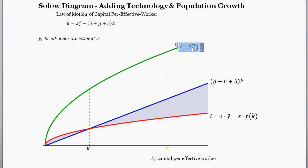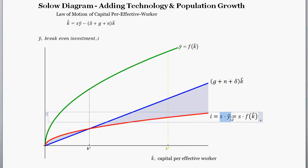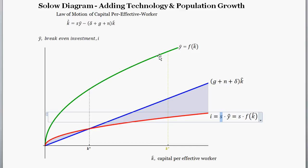The green line is output per effective worker. Its concave shape is defined by the Inada conditions and the fact that output increases with capital but at a decreasing rate. The red line is our investment curve — investment equals the savings rate times output per effective worker. So this red line is just a fraction of the green line, defined by the savings rate. If the savings rate is 0.3, you multiply output by 0.3 to get that red line.